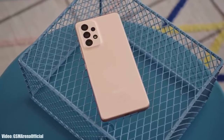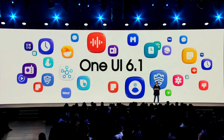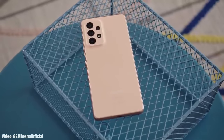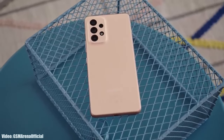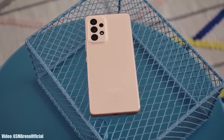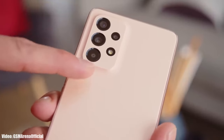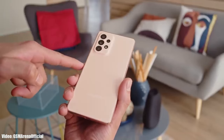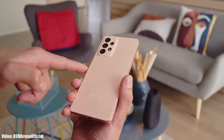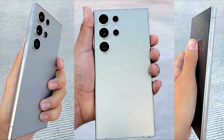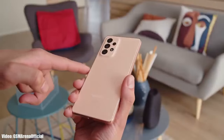It's time to talk about the OneUI 6.1 update for Samsung Galaxy A53. The Galaxy A53 got the Android 14 OneUI 6 update about a month ago, and now Samsung will release the OneUI 6.1 update for the Galaxy A53. OneUI 6.1 will be an updated version of OneUI 6, which will bring the features of the latest S24 series to A-series Samsung smartphones that are currently running on OneUI 6.